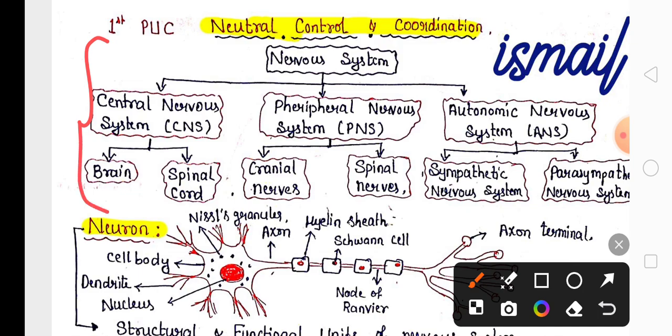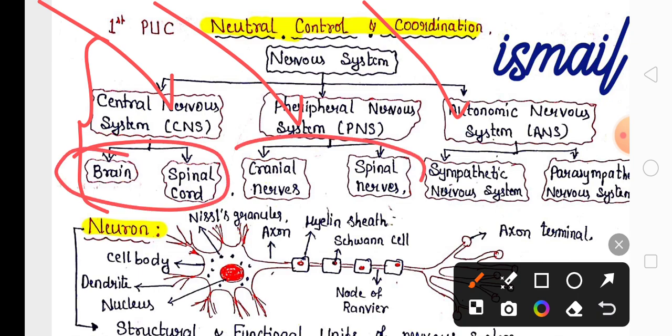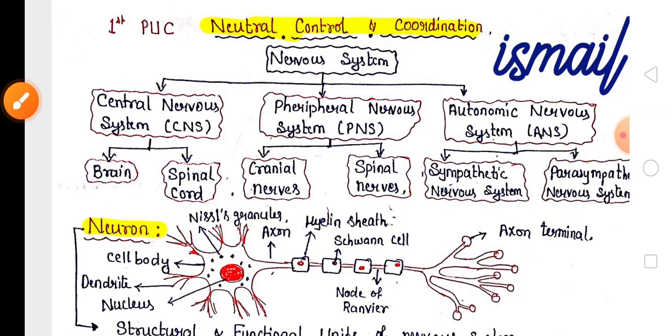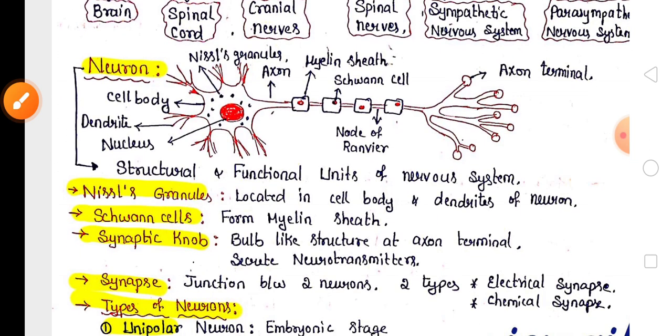First, remember the classification of Nervous System. It is classified into Central Nervous System, Peripheral Nervous System, and Autonomic Nervous System. CNS has Brain and Spinal Cord. PNS has Cranial Nerves and Spinal Nerves. ANS has Sympathetic and Parasympathetic Nervous System.